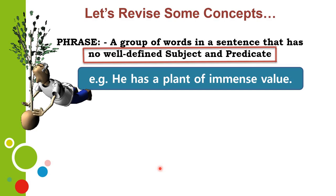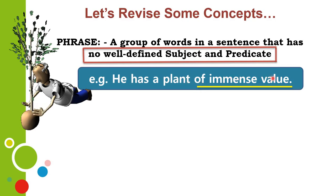One example: 'He has a plant of immense value.' What is underlined here is 'of immense value.' If you see here, 'he has a plant' is a proper sentence by itself, wherein 'he' is the subject and 'has a plant' is the predicate. But 'of immense value' is a phrase because there is no subject that you can identify here properly. There is no subject and no proper predicate, and therefore this is a phrase.